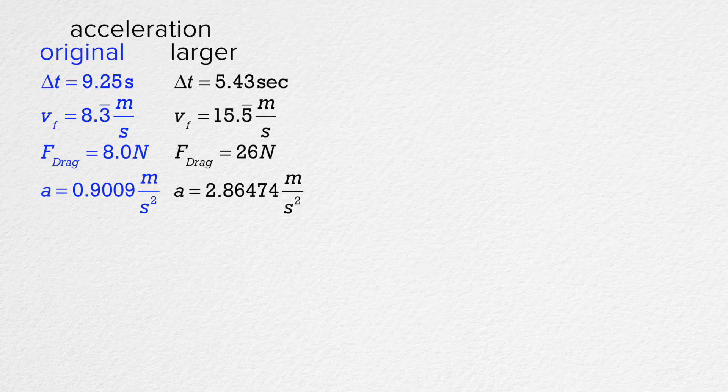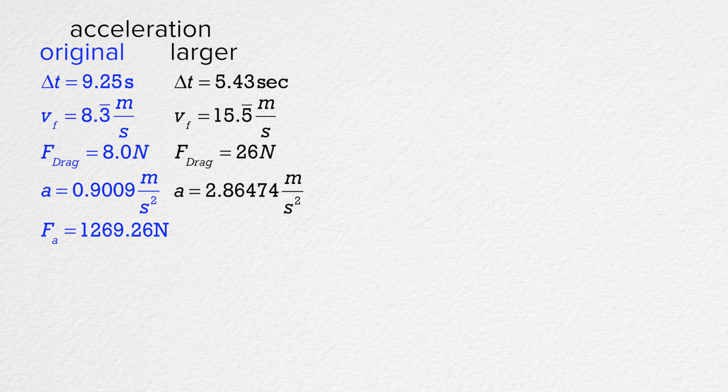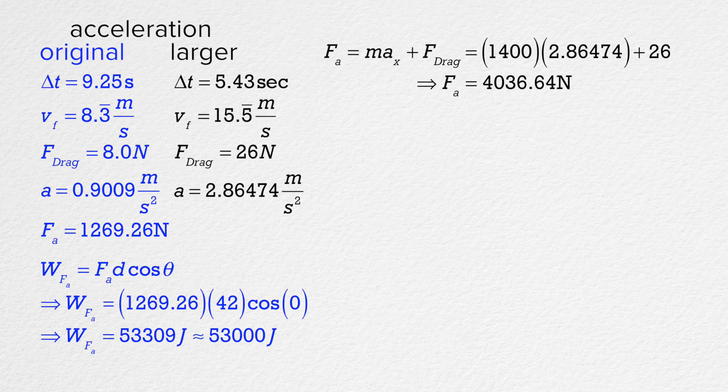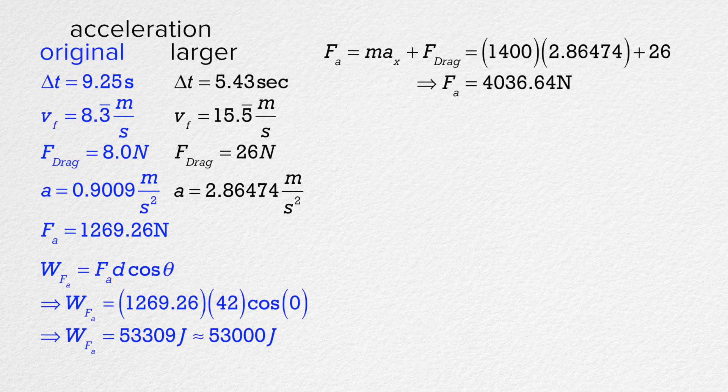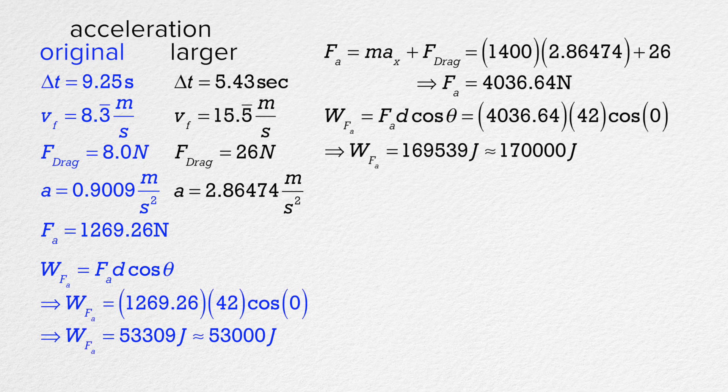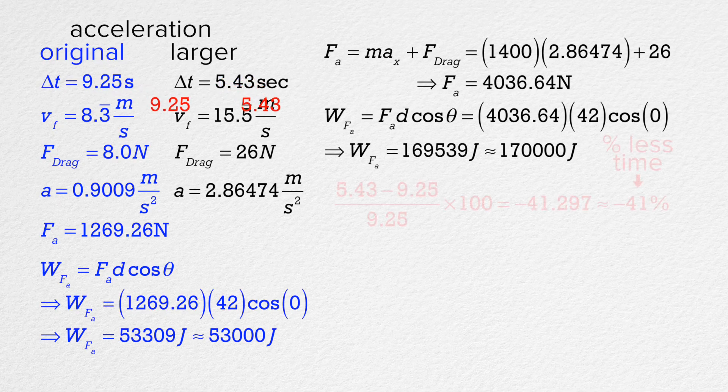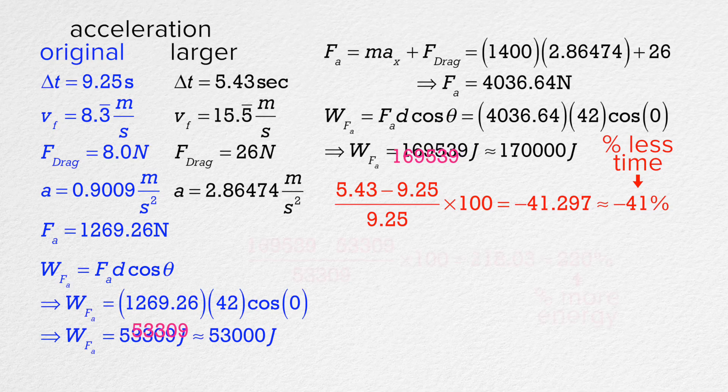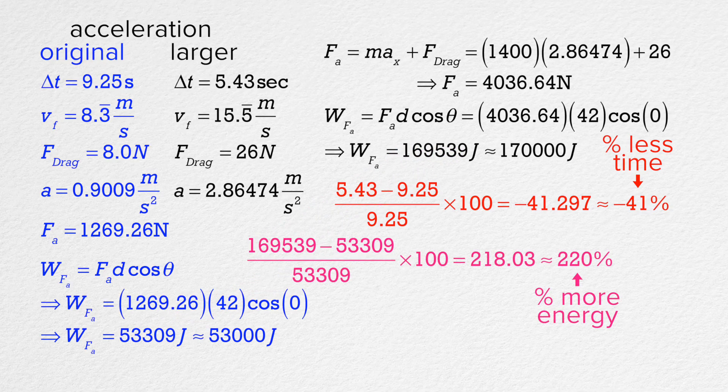The original force applied was about 1,270 newtons and the new force applied is about 4,040 newtons. The work done on the car by the engine in the original example is roughly 53,000 joules. The work causing the larger acceleration is roughly 170,000 joules. In other words, in order to decrease the time of the event by 41%, you need to use 220% more joules of energy. That is a lot of unnecessary horses, hay, and poop on the planet.